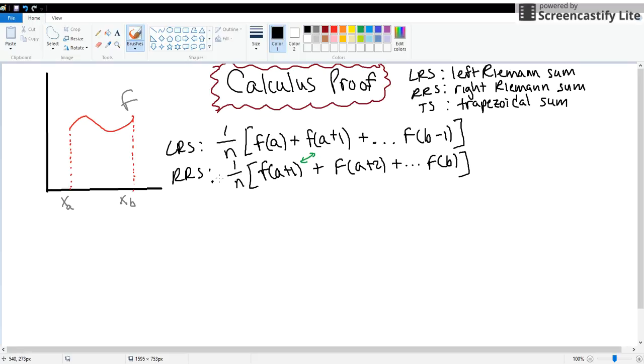So what would happen if I were to take the average of the left and right Riemann sums? Well, both of these expressions are being multiplied by 1 over n, so that's almost like they have a common denominator of n.